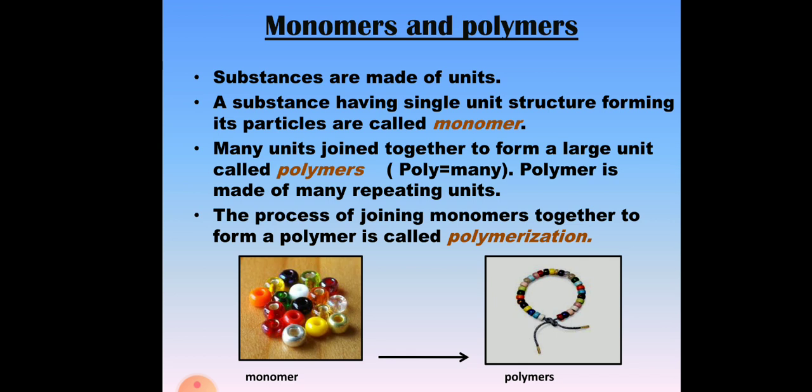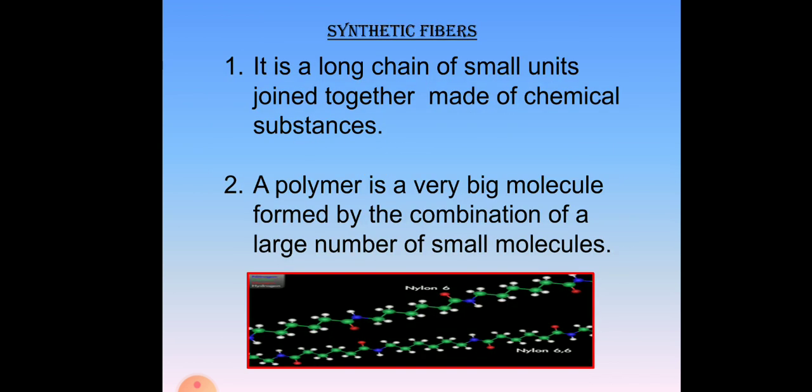The process of joining monomers together to form a polymer is called polymerization. A synthetic fiber is a long chain of small units joined together, made of chemical substances. A polymer is a very big molecule formed by the combination of a large number of molecules.